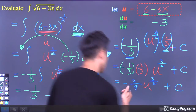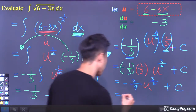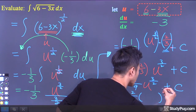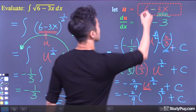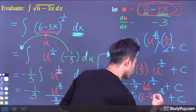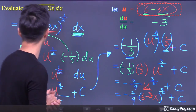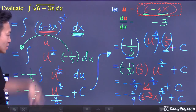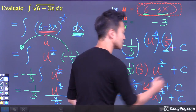At the final step, we just replace u back to its original variable x. So u is just 6 minus 3x. And we are completely done. The indefinite integral of the radical function, square root of 6 minus 3x, is negative 2 over 9 times (6 minus 3x) to the power of 3 over 2, plus C.